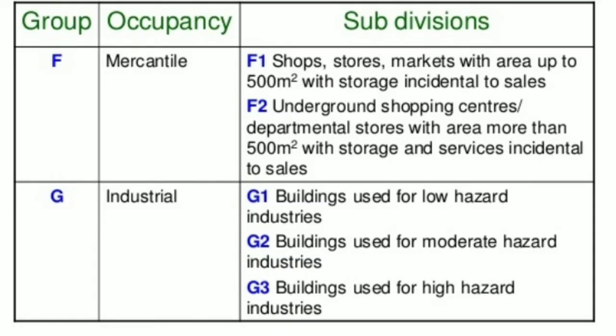Group F buildings are Mercantile Buildings. F1 covers shops and stores, and F2 covers underground shopping centers and departmental stores with area above 50 square metres.